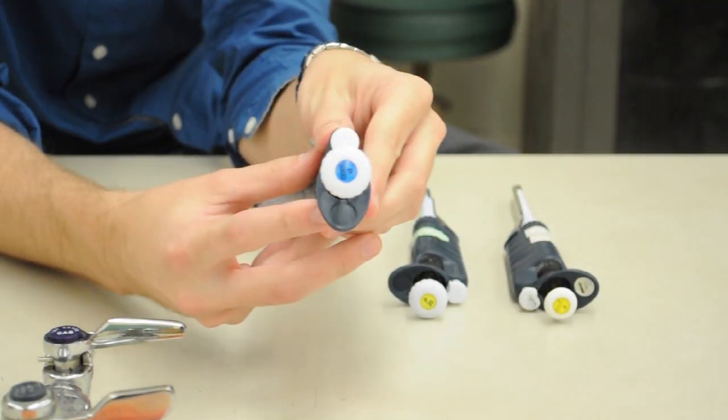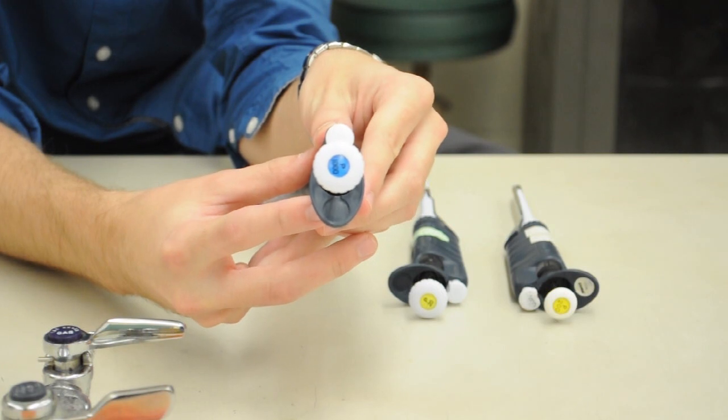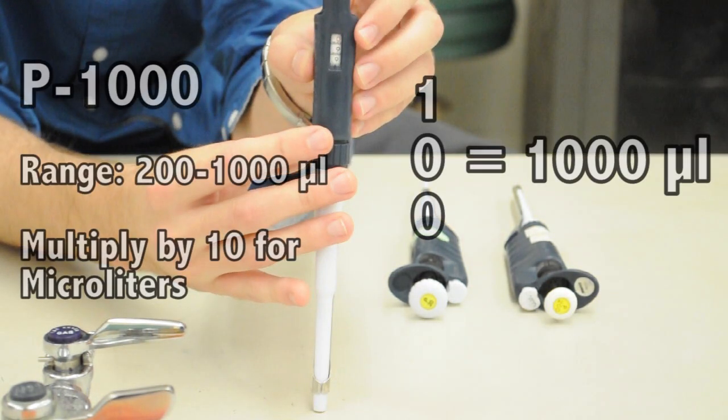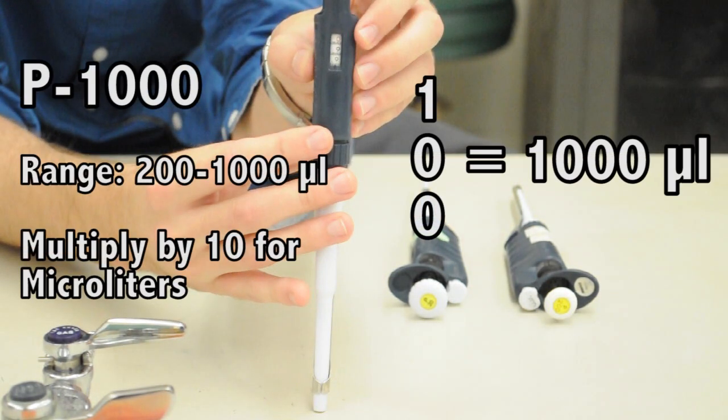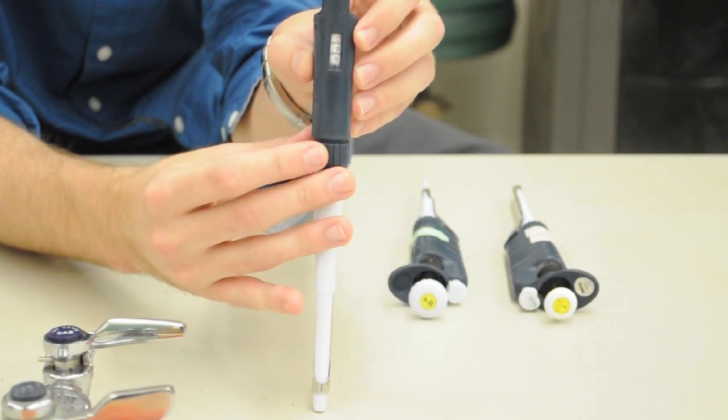For the P1000, the effective range is 200 to 1000 microliters. And you'll multiply the 3 digit number you see by 10 in order to get the number of microliters that you'll be working with.